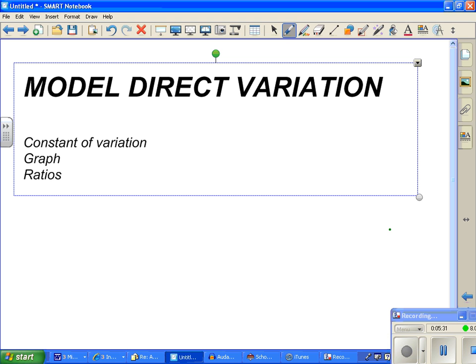So, direct variation. Constant of variation. We talked about it. That's the a, which is essentially the slope. That's how much you're changing. The graph always has to go through (0, 0). It's going to be a straight line every time. And using ratios y over x to find your constant of variation. Hopefully it's a pretty simple idea. Hopefully we can build on what we did yesterday with this. Most folks don't have too much difficulty with constant of variation or with direct variation. So hopefully this makes sense to you.